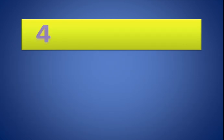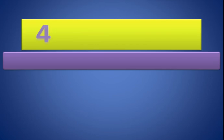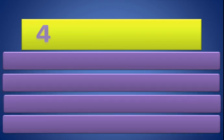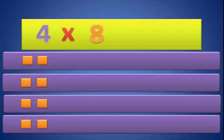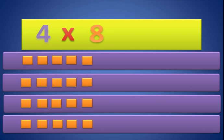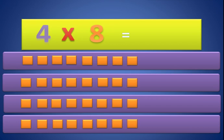Now 4 times 8. We need 4 groups — 1, 2, 3, and 4. We need 8 in each group — 1, 2, 3, 4, 5, 6, 7, and 8. So 4 times 8 equals 32.